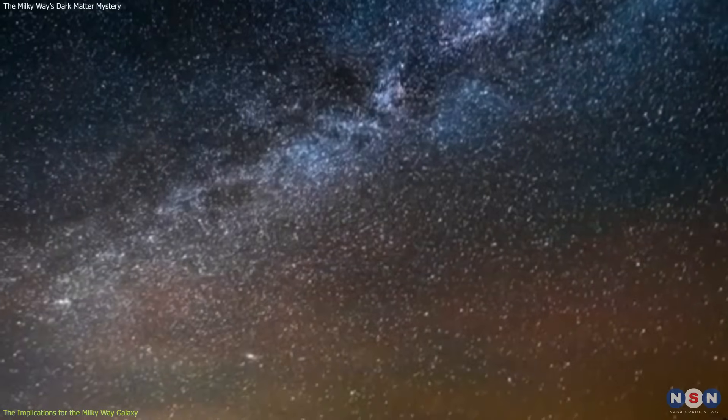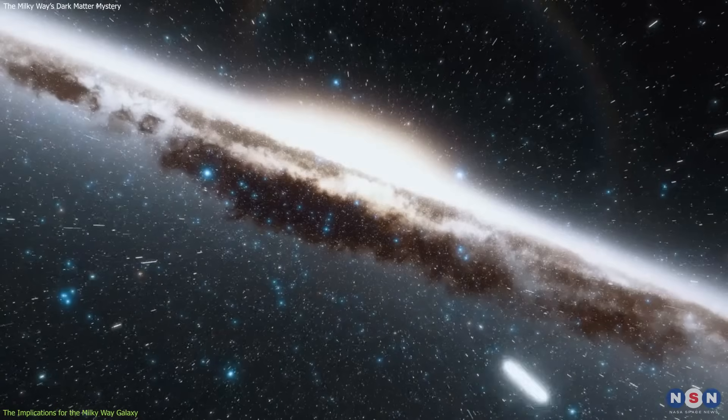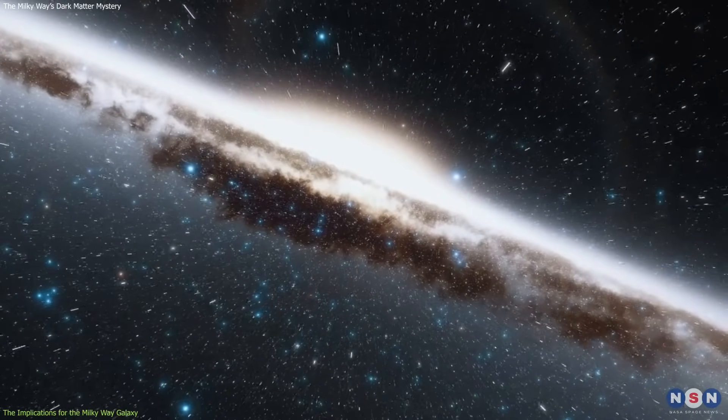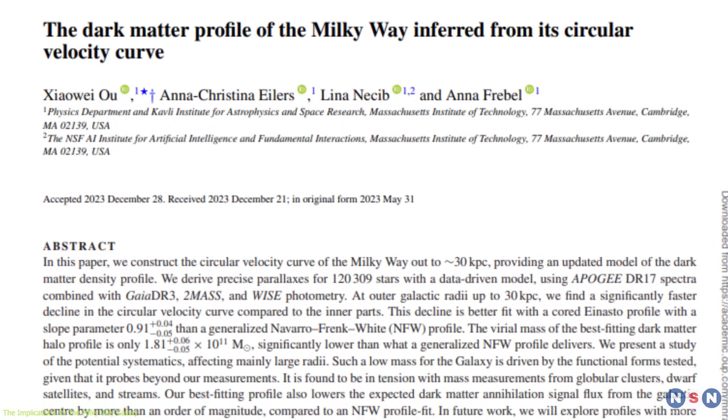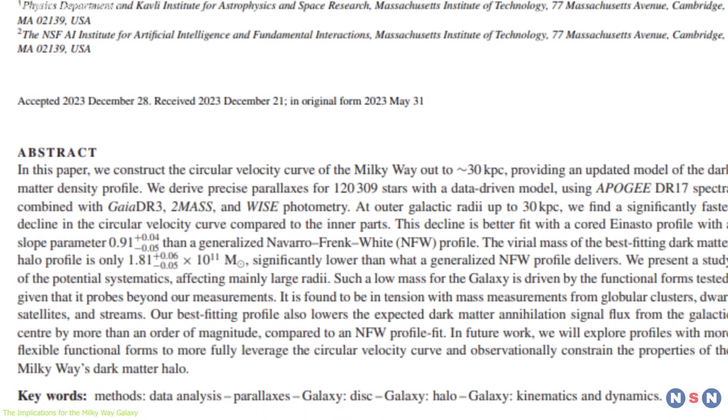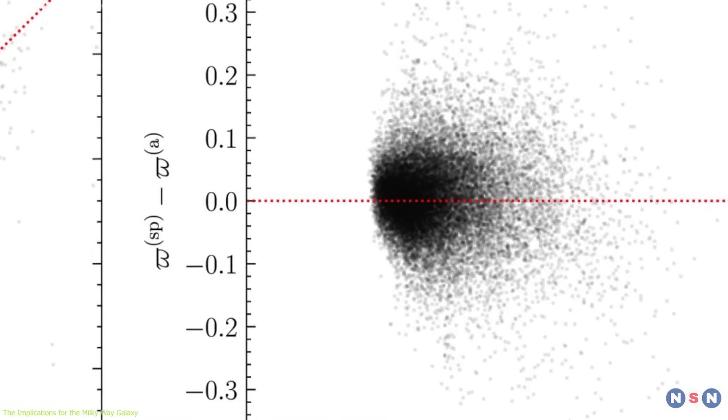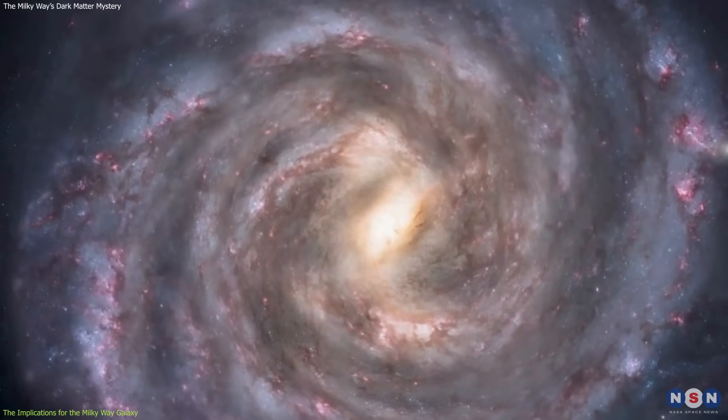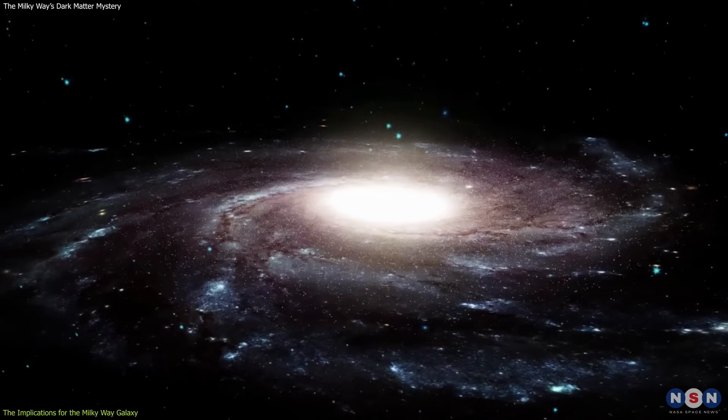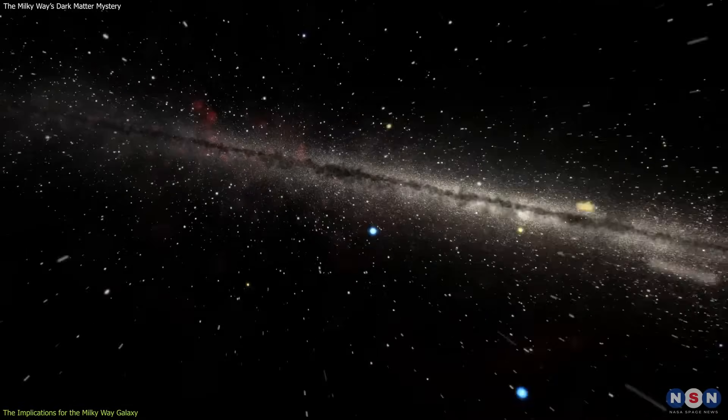Previously, scientists suggested that the disk of the Milky Way galaxy is stable and calm, and that it has not experienced any major disturbances or interactions with other galaxies for a long time. However, this new study challenges this view, and suggests that the disk may be more dynamic and turbulent than expected, due to the lower mass and gravity of the bulge and the halo. This means that the disk may be more prone to instabilities and perturbations, such as warps, bars, and spiral arms, which can affect the distribution and motion of the stars and the gas in the disk.